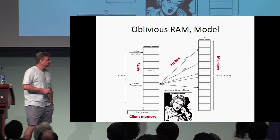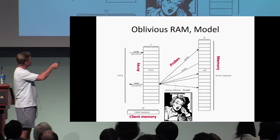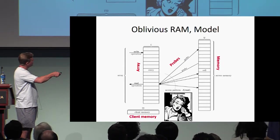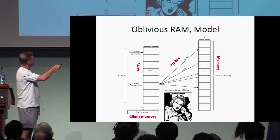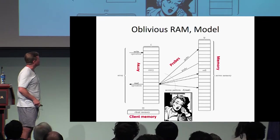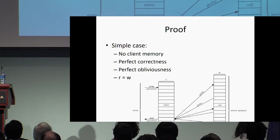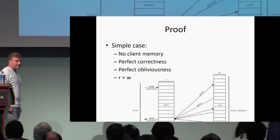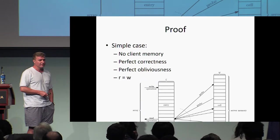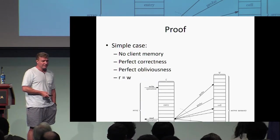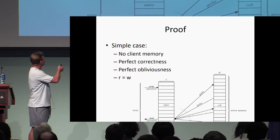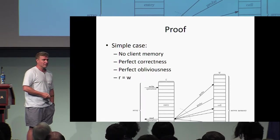To remind you of the model: we call the simulated thing the array and the physical storage the memory. Accesses to the memory we call probes — write probes and read probes. There will also be a small client memory. We'll start with the simple case: no client memory, perfect correctness, perfect obliviousness, and equal word sizes in the array and the physical memory. In this setting you need a log n overhead.